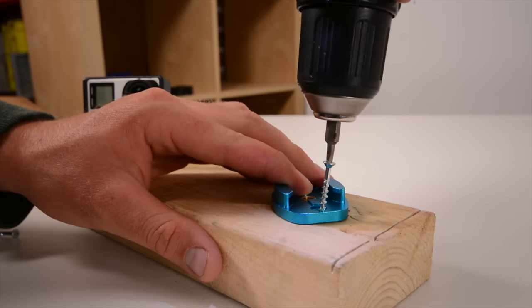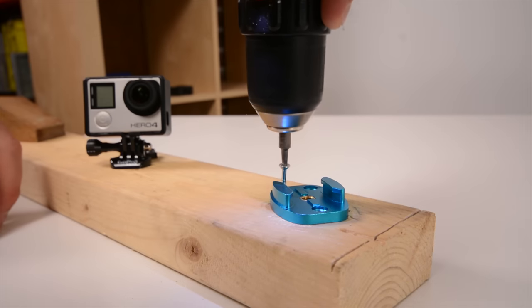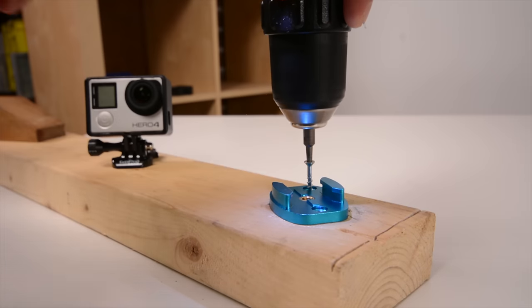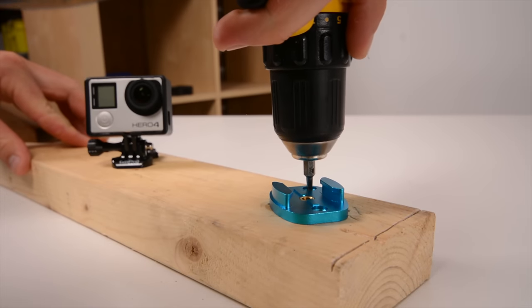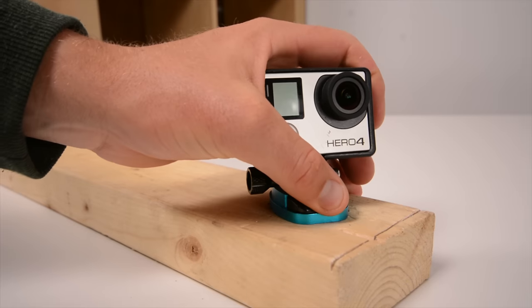This is the flat aluminum GoPro buckle mount with pre-drilled countersunk holes for use with screws or bolts. It was sent to me by the guys over at Banggood, you can check them out down in the description, but it's got pre-drilled holes in it that you can use a standard flathead wood screw or flathead bolt to bolt onto things.